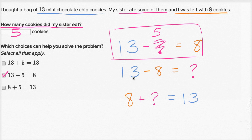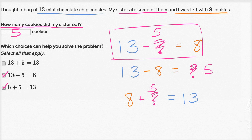What about 13 minus eight? We know that equals five, but there's no option showing 13 minus eight equals five, so we don't select that. Then: eight plus five is 13 — that's useful too. Because if we know eight plus five is 13, then what I'm left with plus what my sister ate gives the 13 I started with. As for 13 plus five equals 18 — that's not useful. 18 has nothing to do with the problem. My sister ate those cookies, she didn't bake more. So I subtract them, not add.